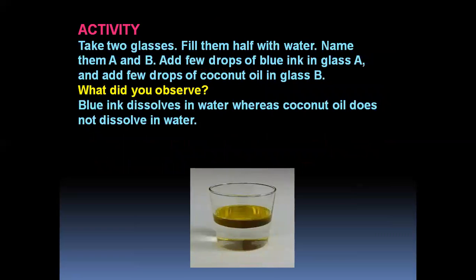Another activity to show insolubility: Take two glasses and fill them with water. Name them A and B. Add a few drops of blue ink in glass A, and a few drops of coconut oil in glass B. Blue ink dissolves in water — it is soluble. Whereas coconut oil does not dissolve in water. You can use any oil. See how it appears in the glass — it does not dissolve in water. That is insoluble.